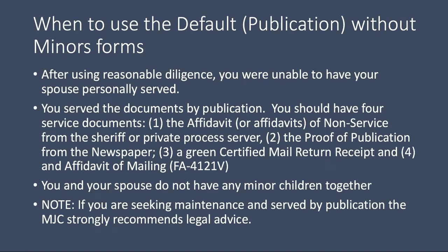The first section is a brief intro on when to use the default publication forms without minors. You'll use these if you tried to serve your spouse, and after you used reasonable diligence to try and have your spouse personally served, you were unable to do so. That means you tried to serve through the sheriff or a private process server and were unable to do so with reasonable diligence — basically, you tried as hard as you could and were unable to get your spouse served.